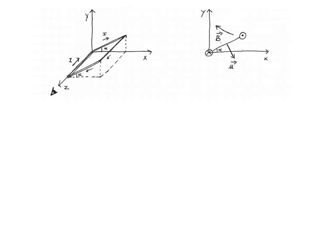Now the next step is to calculate the magnitude of the magnetic moment vector. The magnitude is given by n, the number of turns, multiplied by the current, multiplied by the area of the coil: 10 multiplied by 1.5 Amperes multiplied by (0.0447 meters) squared, giving 3 times 10 to the negative 2 ampere·meters squared.